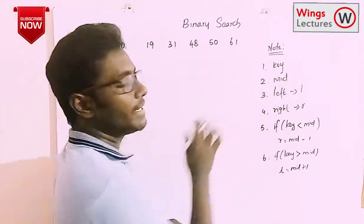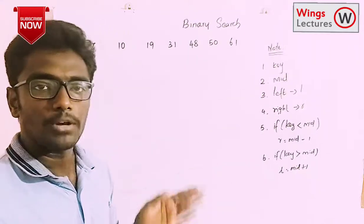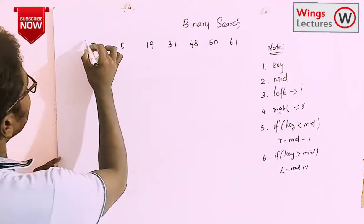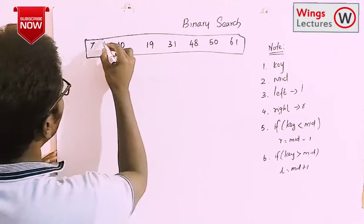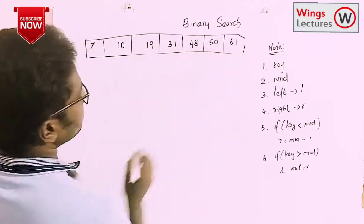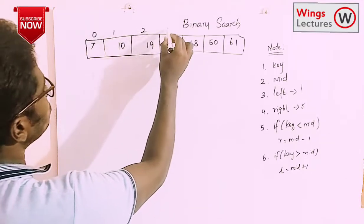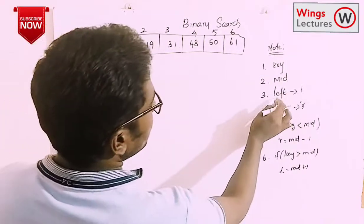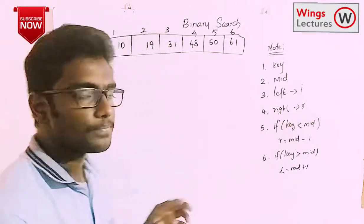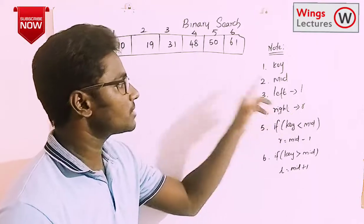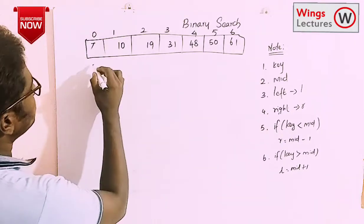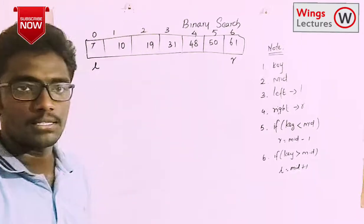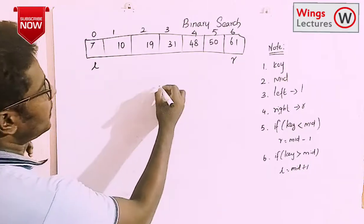Mid is the mid value from the available data. Let's define the elements in an array and give the indices 0, 1, 2, 3, 4, 5, 6. Then we have left (L) and right (R) pointers — L is the leftmost data from the array and R is the rightmost data. L is at index 0 and R is at index 6.